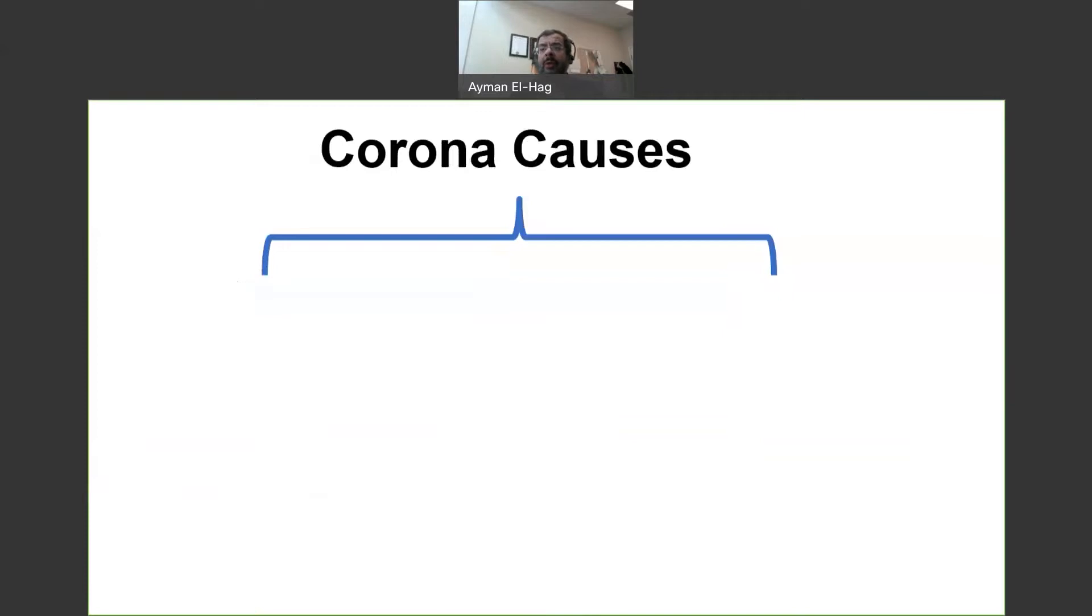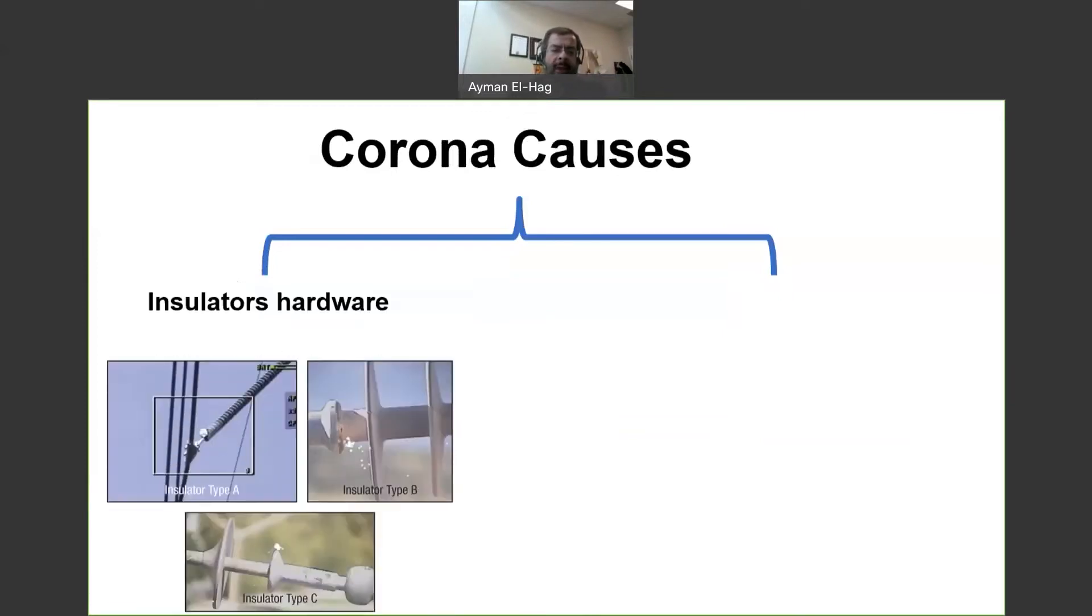Now Corona can be caused by two main reasons. The first one is by the insulator hardware. So if there is a defect in the hardware, sharp point, you might see some sort of surface discharge here on the surface of the insulator that will lead to aging.